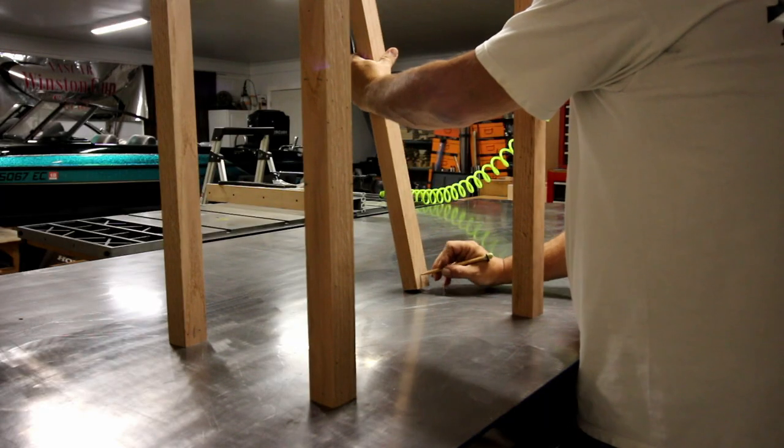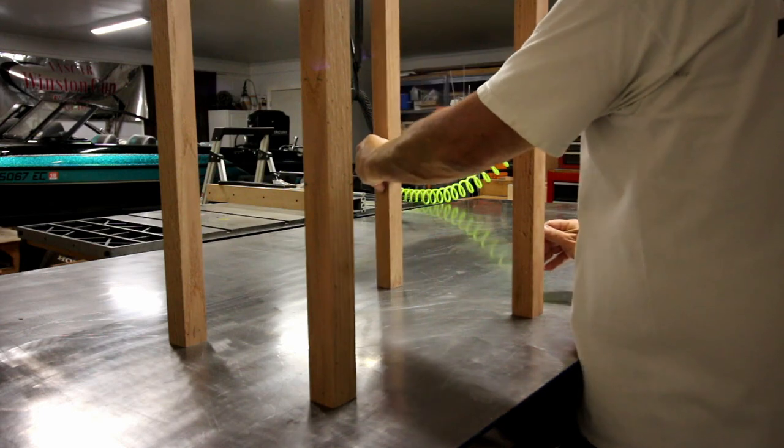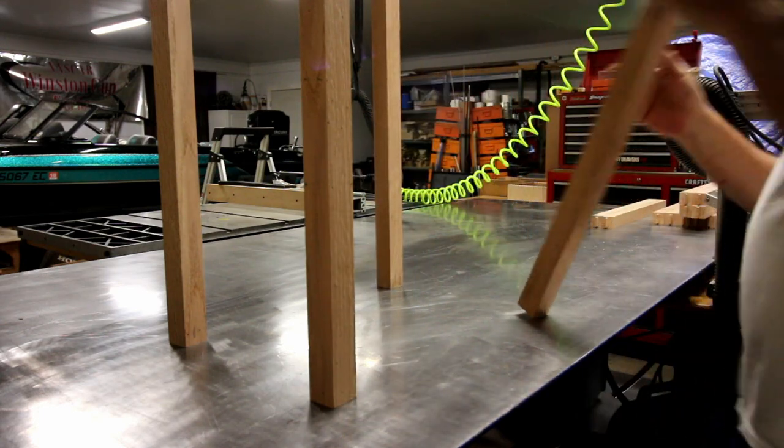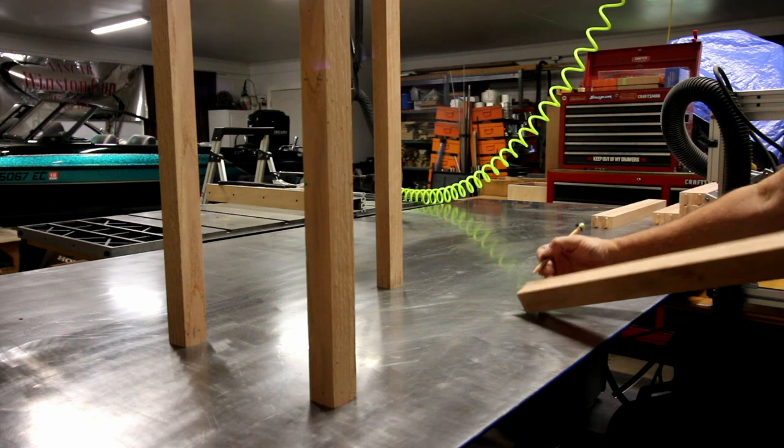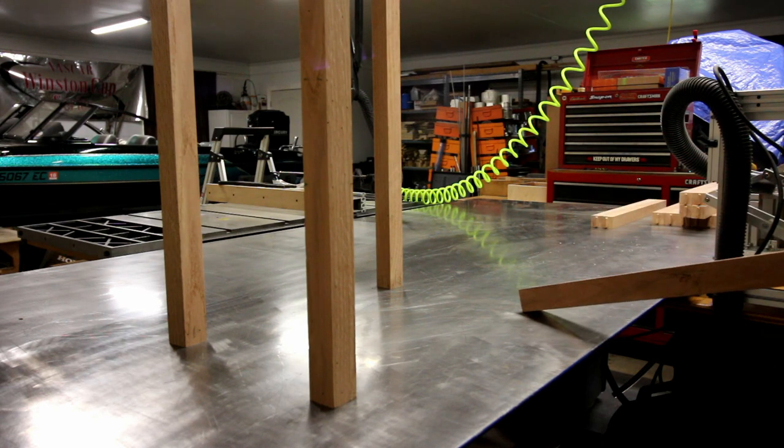And here I'm just marking out the mortise locations roughly for the four uprights so that whenever I get to the panorouter I don't make a mistake and cut the mortise in the wrong location.